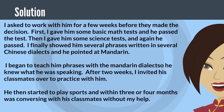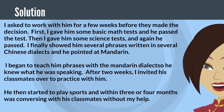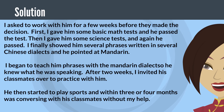I asked to work with him for a few weeks before they made the decision. First, I gave him some basic math tests and he passed. Then I gave him some science tests and again he passed. I finally showed him several phrases written in several Chinese dialects and he pointed at Mandarin. I began to teach him phrases in Mandarin so he knew what he was speaking. After 2 weeks, I invited his classmates over to practice with him. He then started to play sports and within 3 or 4 months was conversing with his classmates without my help.